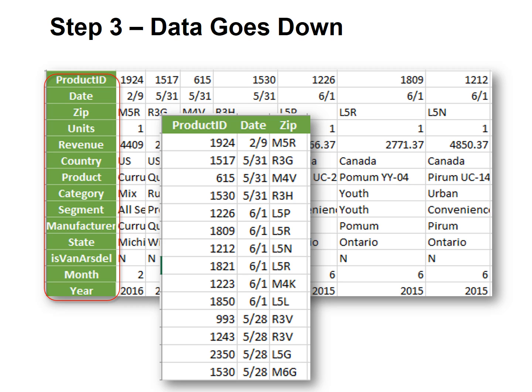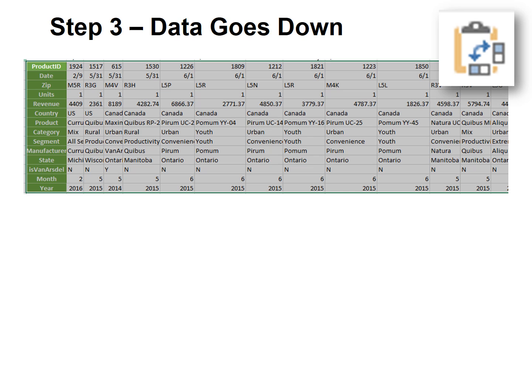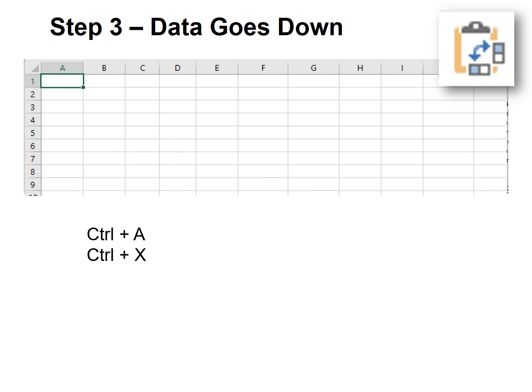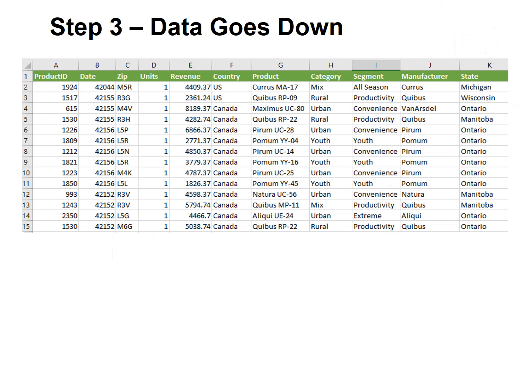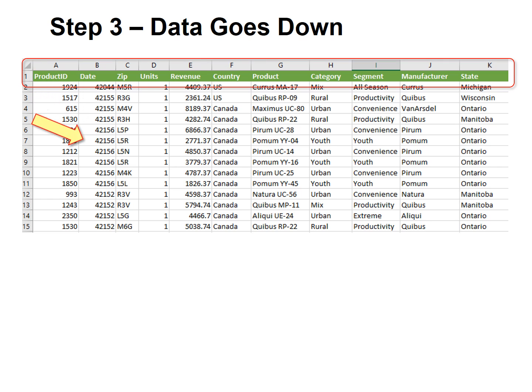Good news! Excel has a tool that can fix this fast. You might have seen it but not used it. Transpose is on the right-mouse click. Simply select your data and cut it. Put your cursor in the one cell at the top-left corner of where you want the data to appear, right-click, and under Paste Options, choose Transpose.